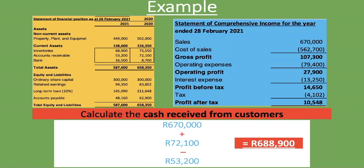Remember, not all of the 670,000 rand in sales may have been received in cash. So we take the 670,000 and add the accounts receivable owed to us at the beginning of the period — 72,100 rand. We then check whether anyone still owes us at the end of the period; that 53,200 rand has not been received yet, so we deduct it. If accounts receivable at the end were zero, we would have received all money from sales and the opening balance.